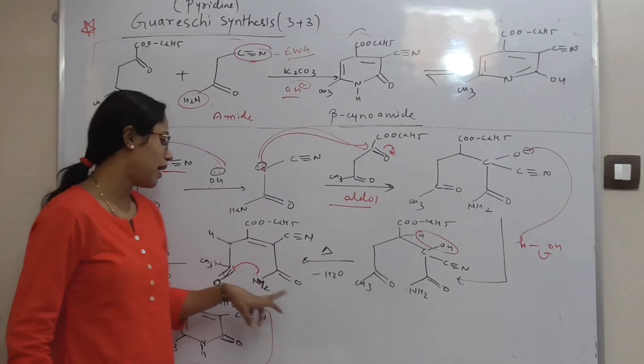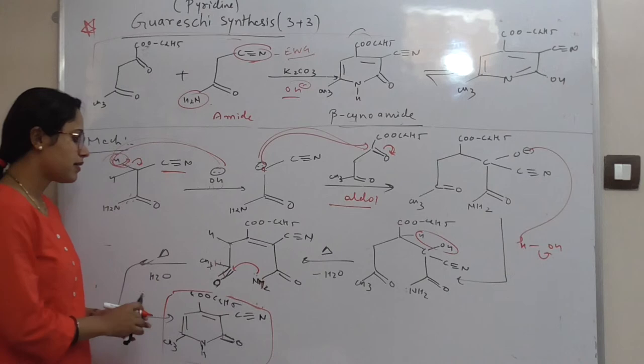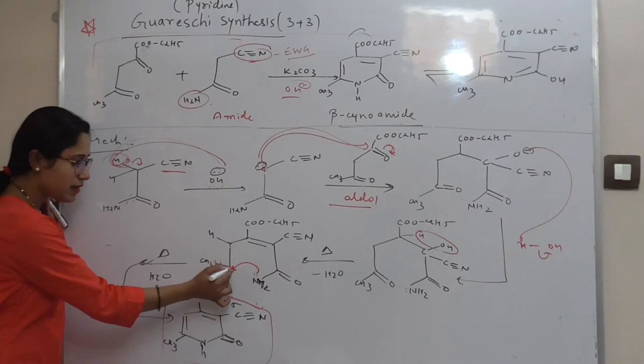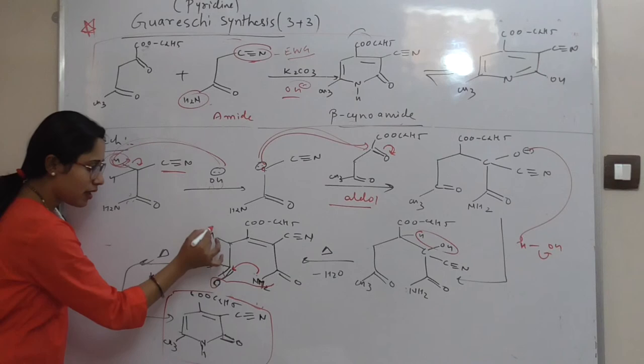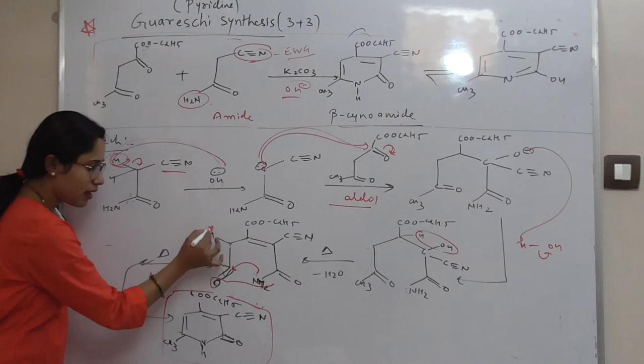Now the next step will be elimination of water molecule, water elimination, which will create a new pi bond. At the same time, this nitrogen acts as a nucleophile and it will attack to this carbon. So here, this H and this H will be removed in the form of water and you will get a new pi bond. So this structure and this structure will be the same.